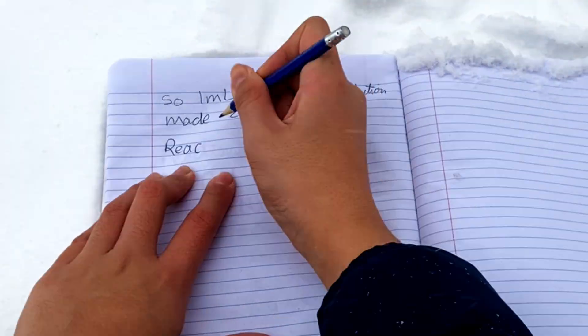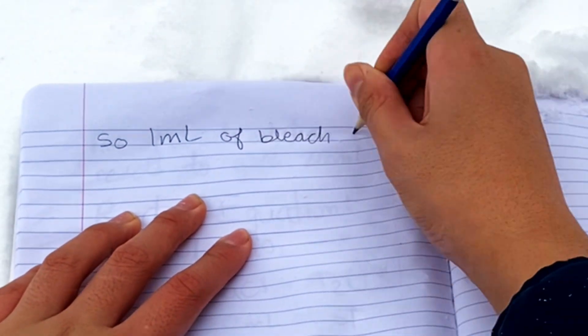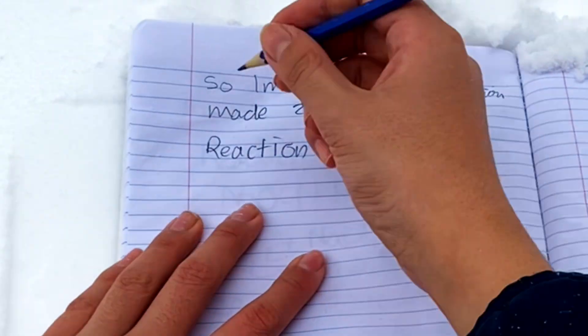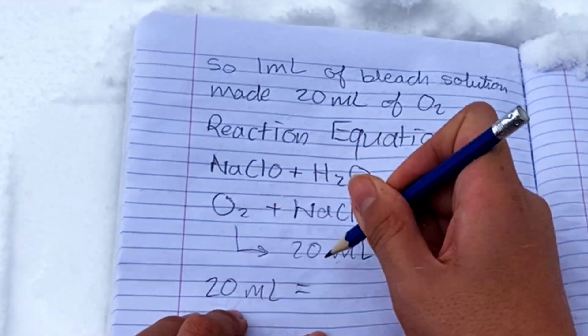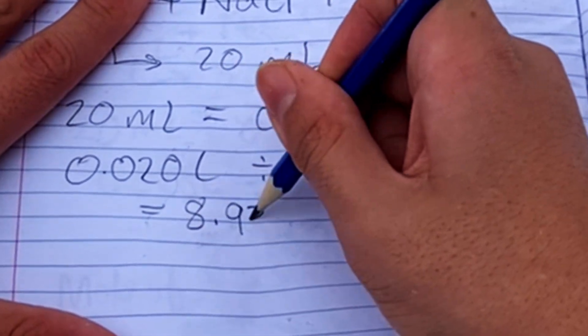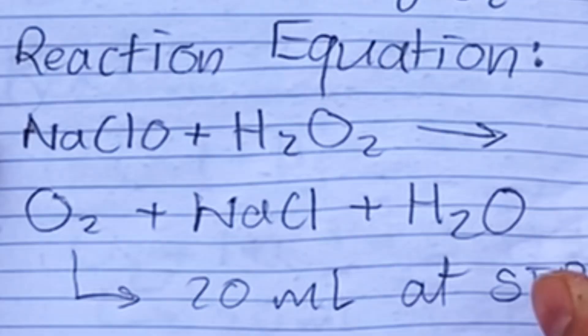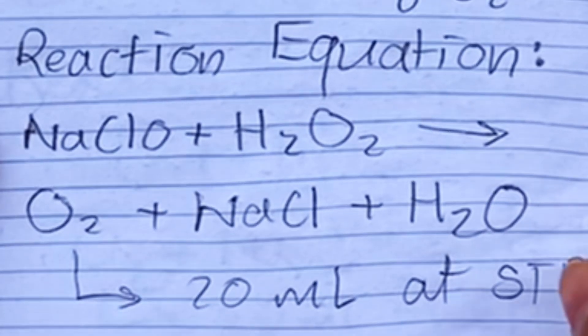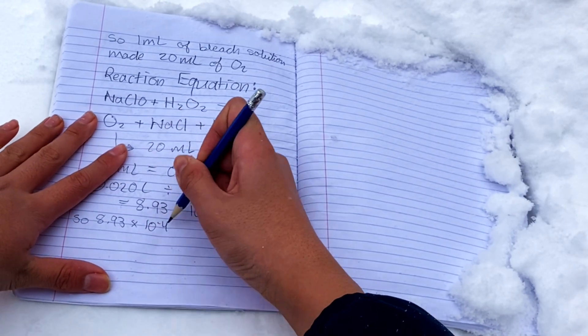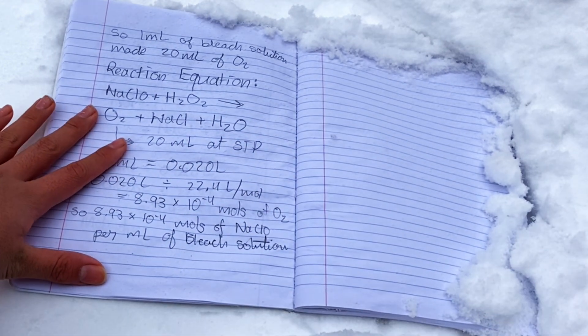Now it's time for some real calculations. So back on my workbench outside, I grabbed some paper and started doing some hardcore calculations. Now since this produced 20 ml of O2, and assuming 1 mole of O2 occupies 22.4 liters of gas at STP, yes, I was doing this in my garage so it was super cold, I can get the number of moles of O2, which is 8.93 times 10 to the minus 4 moles. Next, looking at the titration reaction equation, you can see how the ratio between the bleach and O2 is 1 to 1, meaning there was also 8.93 times 10 to the minus 4 moles of sodium hypochlorite in that 1 ml of bleach solution. Bingo!